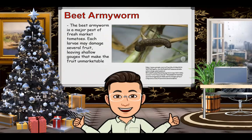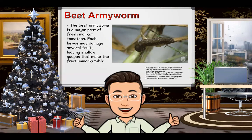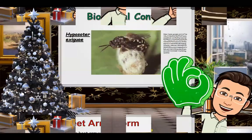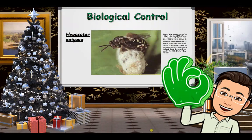The next pest is the Beet Army Worm, which is a major pest of fresh market tomato. Each larva causes severe fruit damage, leaving shallow gouges that make the fruit unmarketable. Newly hatched larvae feed together near the egg cluster. To control this problem, we use Hyposoter exiguae. This parasitic wasp is a natural enemy of Beet Army Worms and also attacks tomato fruit worms and cabbage loopers. Hyposoter exiguae usually kills the larvae in the third instar and generally has its greatest impact early in the season.